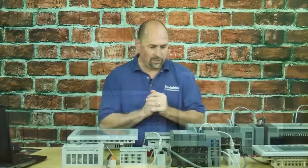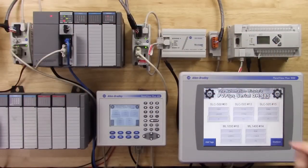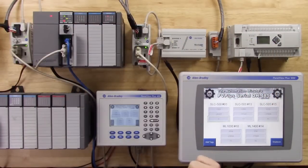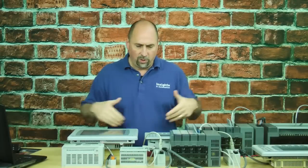Now that same cable would work to the serial port of the 1400, or the serial port of the 505. But in this case, we wanted to put a whole network together. So we're going through AIC Pluses to get everybody on the same network.